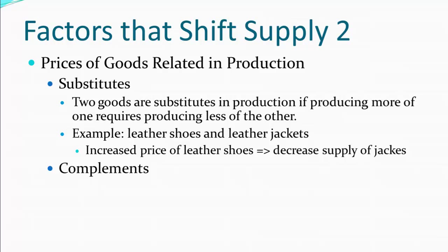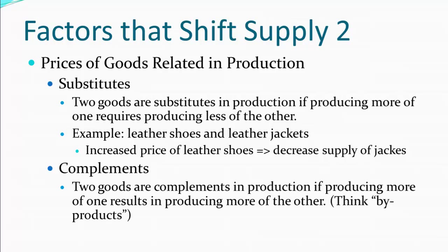Another possibility is that goods may relate to each other as complements. We would say that two goods are complements in production if producing more of one results in producing more of the other. Here it really helps to think of byproducts — if you produce more of one thing, you just happen to end up with more of the other. My favorite example here would be leather and beef. When you slaughter cattle, you end up with the hide that can be tanned into leather, and also the meat that you can eat as beef. These two tend to be produced together; if you produce more of one, you end up with more of the other.